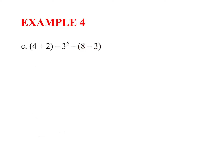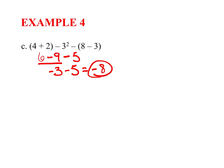For part C, we have exponents and parentheses. Working the parentheses first: 4 plus 2 gives us 6. Minus and addition are always last. 3 squared is 9. Then 8 minus 3 is 5. Now subtracting left to right: 6 minus 9 is negative 3, then minus 5 gives us negative 8.